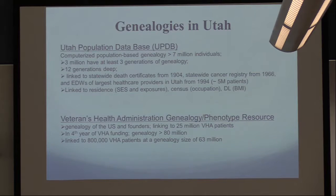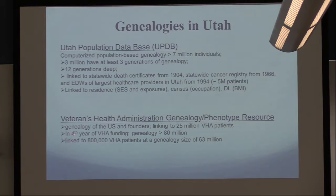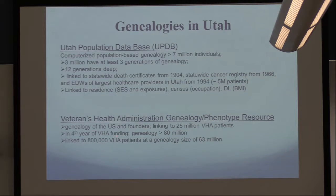It's also been linked to residence data for socioeconomic status, census data for occupation, and driver's license data for BMI. Because this was such a successful resource, I always tried to make it bigger. Right now I have VA funding and we're building the genealogy of the United States, linking it to 25 million VHA patients. We're in our fourth year of funding; our genealogy is already 80 million people with almost a million VHA patients linked.